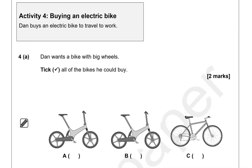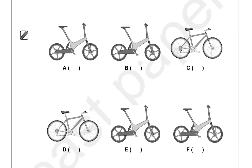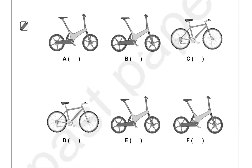Activity 4: Buying an electric bike. Dan buys an electric bike to travel to work. Dan wants a bike with big wheels — tick all of the bikes he could buy. With big wheels we've got C and D; the rest of them have smaller wheels.